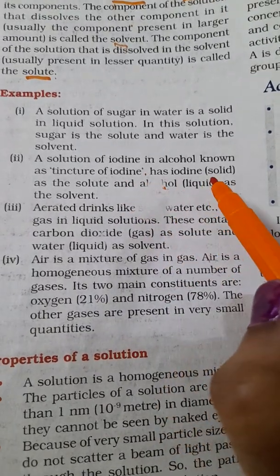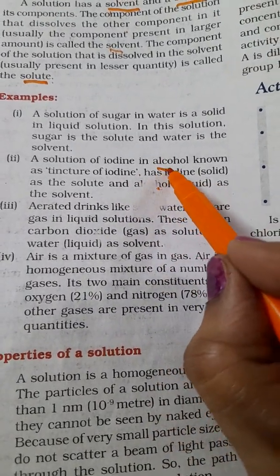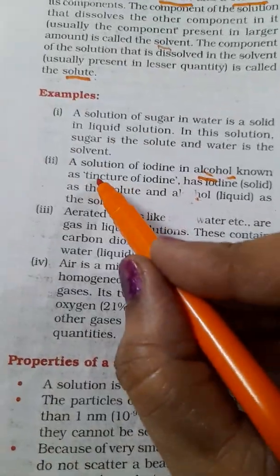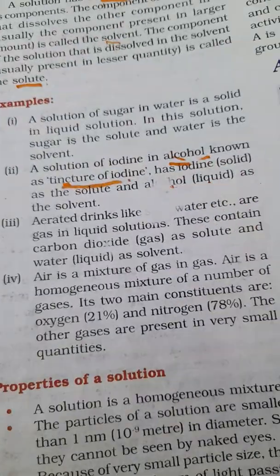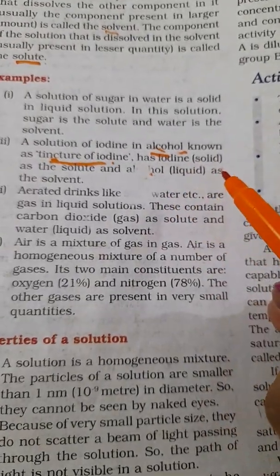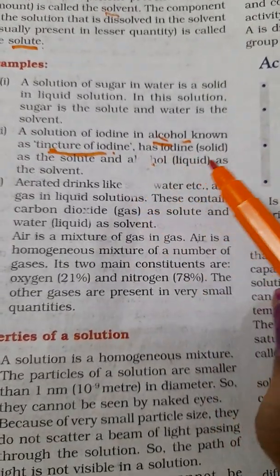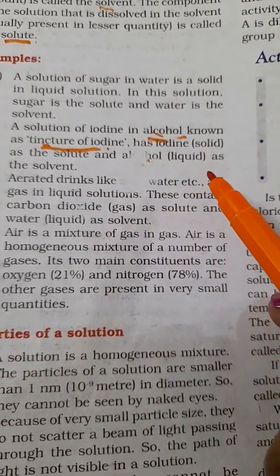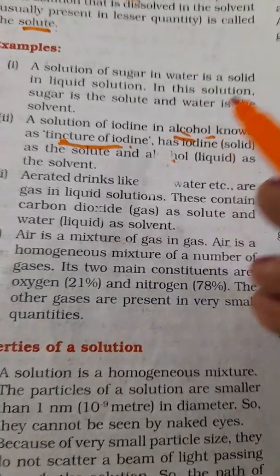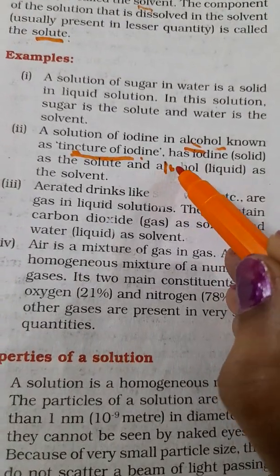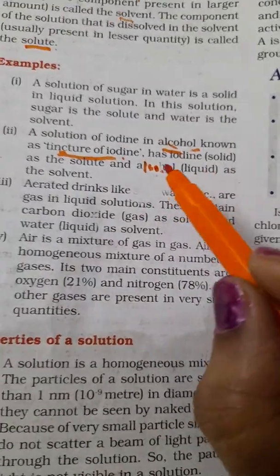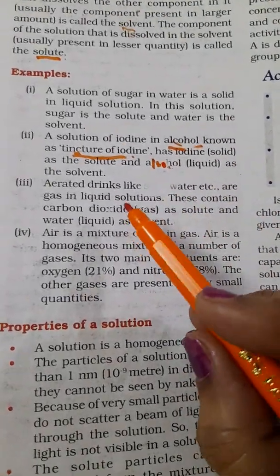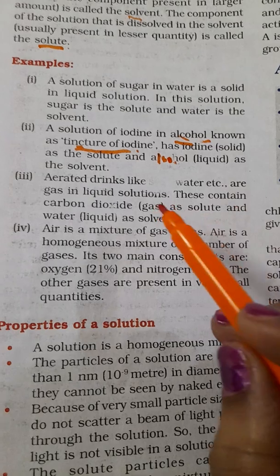Suppose you take some iodine in alcohol. Iodine is violet in color and if you dissolve it in alcohol you call it tincture of iodine. Here iodine solid is the solute and alcohol liquid is the solvent.